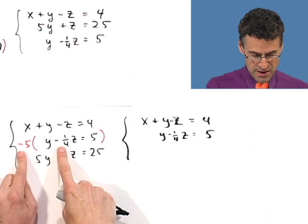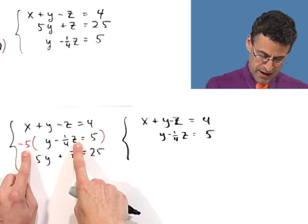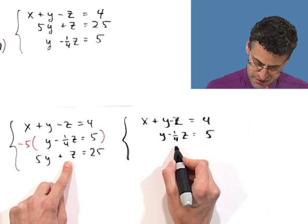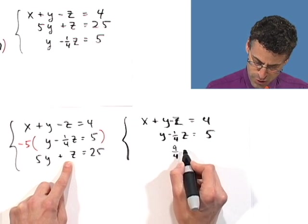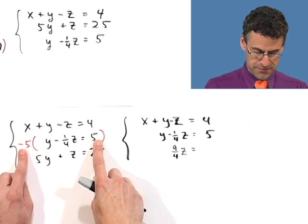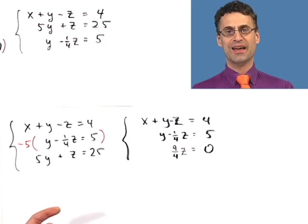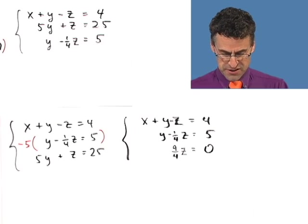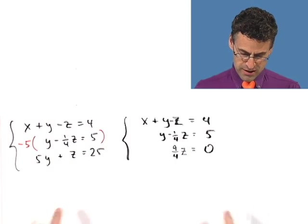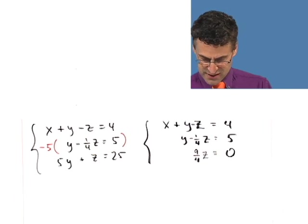Now, here I have negative 5 times minus a quarter. That's plus 5 fourths. So I have 5 fourths plus 1, which is 4 fourths. And that gives me 9 fourths. So I have 9 fourths z. And now I have negative 5 times 5. That's negative 25. If I add 25, that gives me 0. Oh, how awesome is that? Now I'm liking it. By the way, now I'm feeling good. Why? Because first of all, now we have a triangular form. So all this great work we did can now be just discarded. All we care about is this. And now I can use back substitution to actually find the answer.